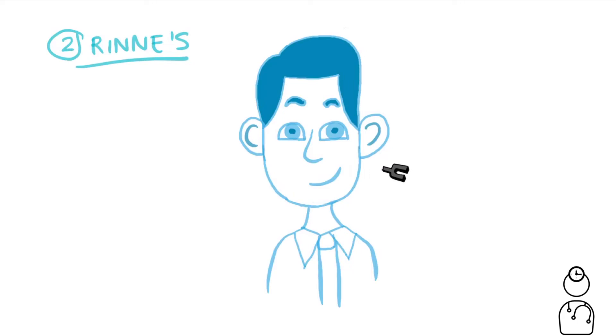Once he stops hearing the sound through the mastoid process we need to move the tuning fork right next to his ear. This will measure air conduction. In a normal situation Bob will say that the sound was louder when the tuning fork was next to his ear than when it was on the mastoid process.